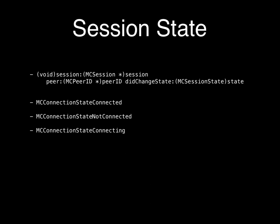Sessions have a state for each peer. Within a session there's a peers array you can iterate through, and each peer has a state: connected, not connected, or connecting. You can query this state on the session and update local variables. It's best to check this before sending because you'll get an error if you try to send to a peer that isn't connected.